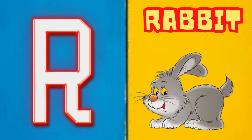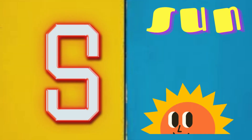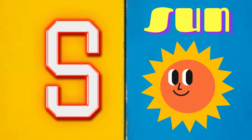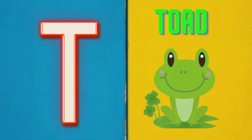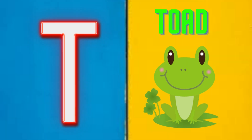R is for rabbit, r-r-rabbit. S is for sun, s-s-sun. T is for toad,